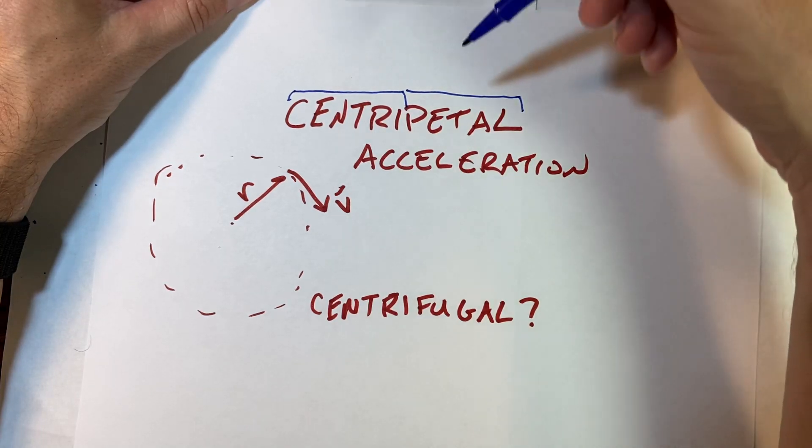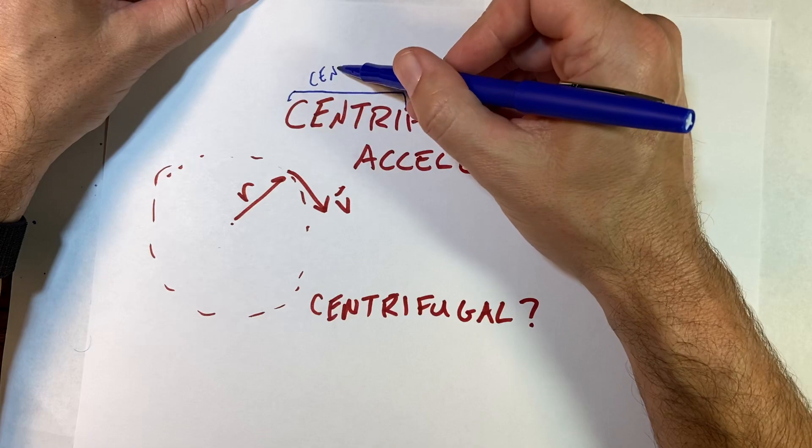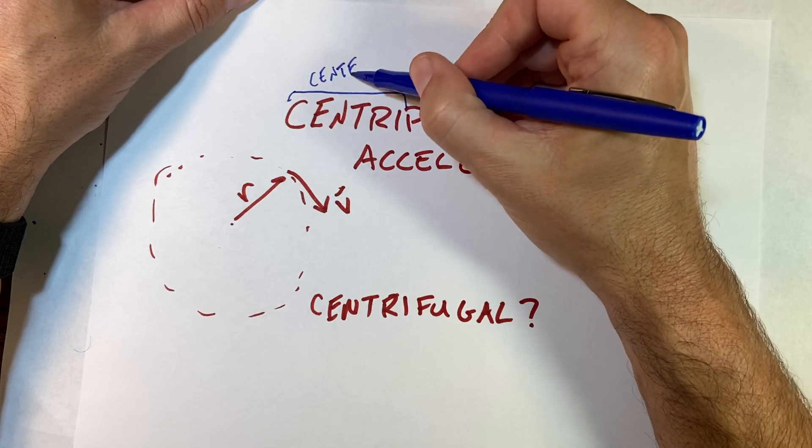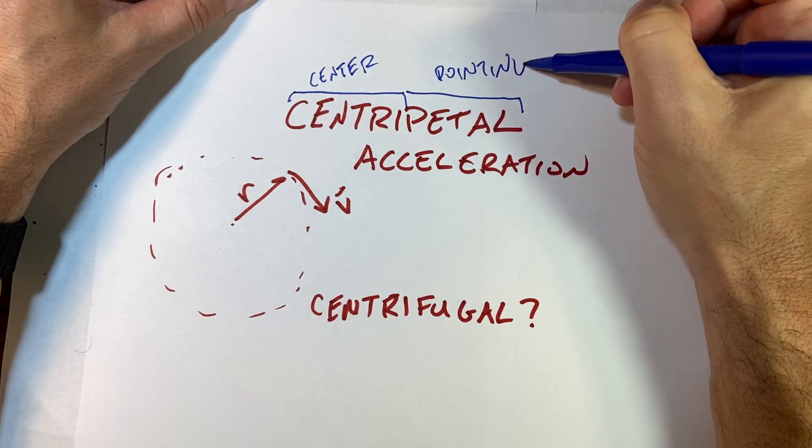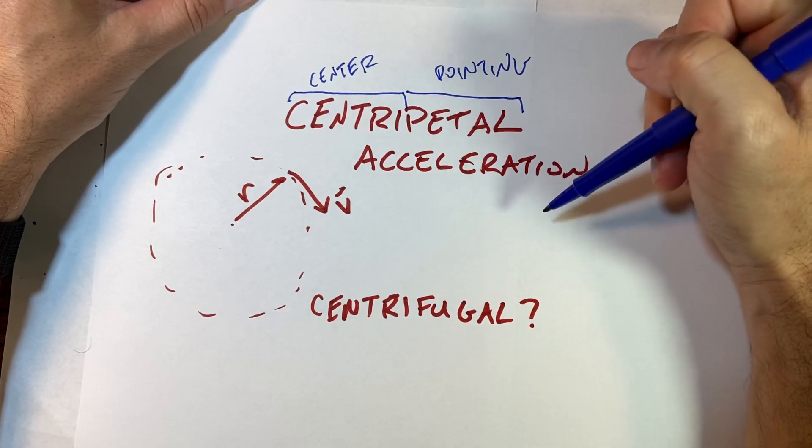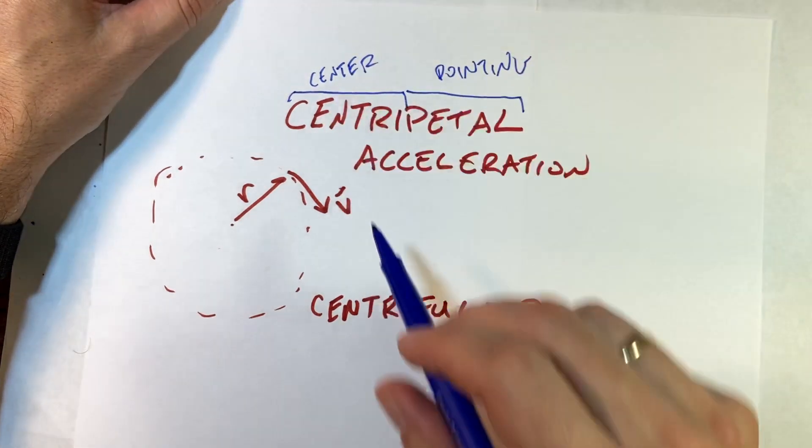This is center, centra, right? Center. And this is pointing—this is the center pointing acceleration. So this is the acceleration of an object moving in circles.